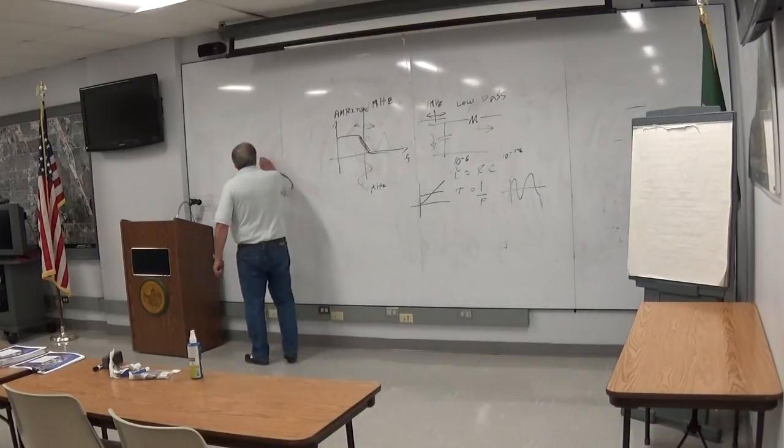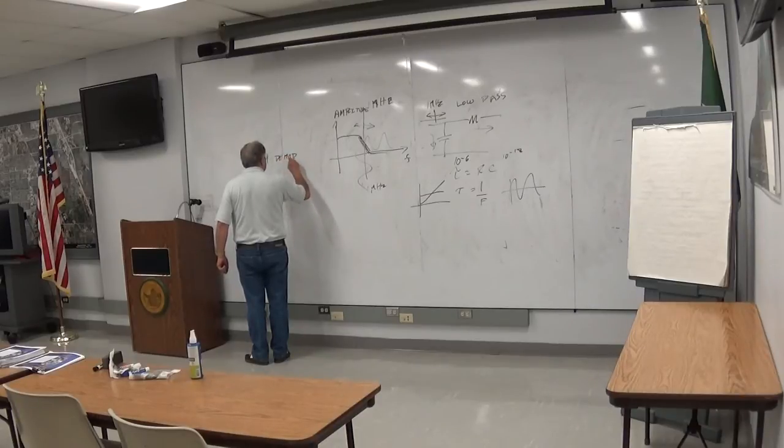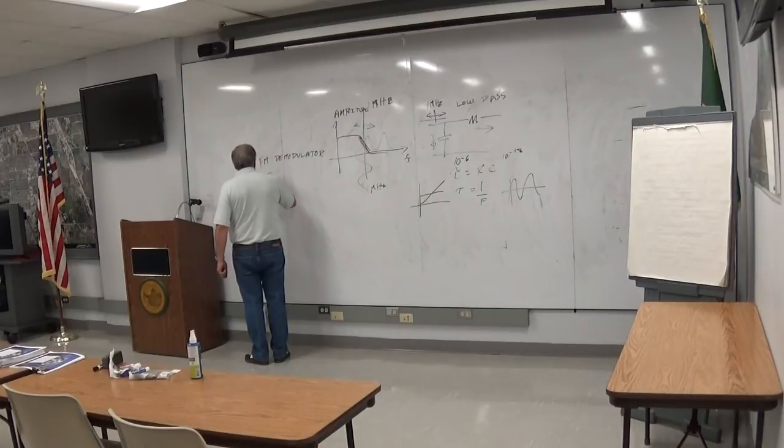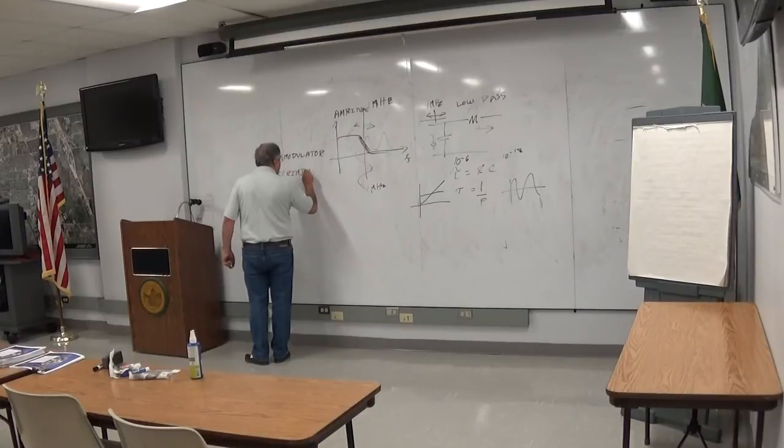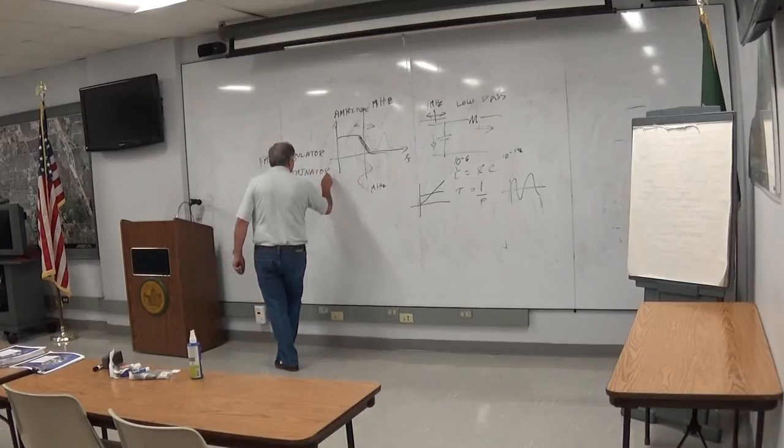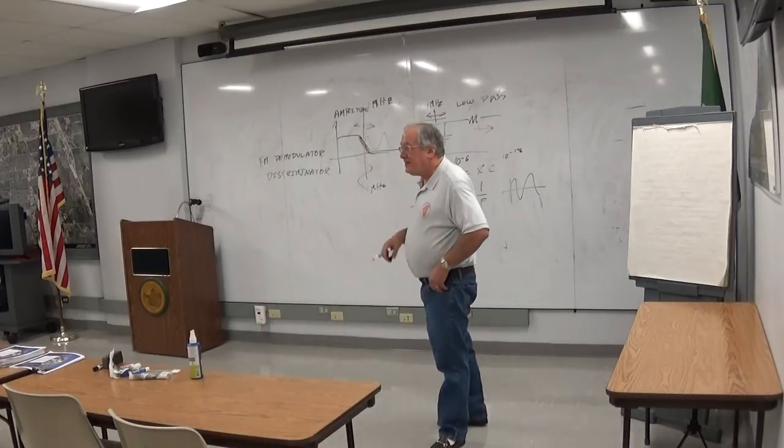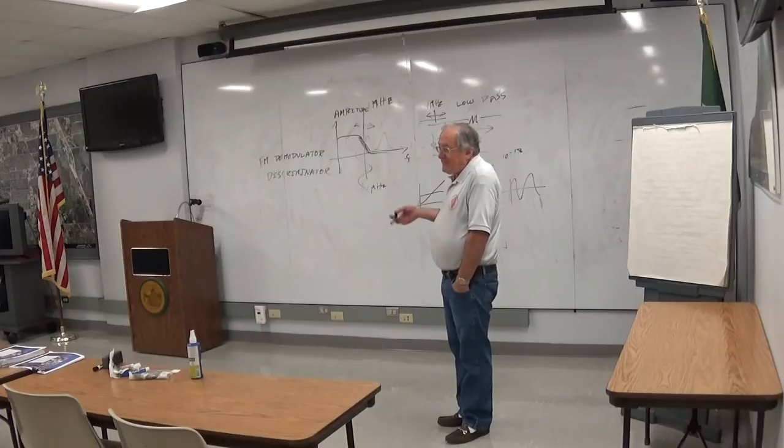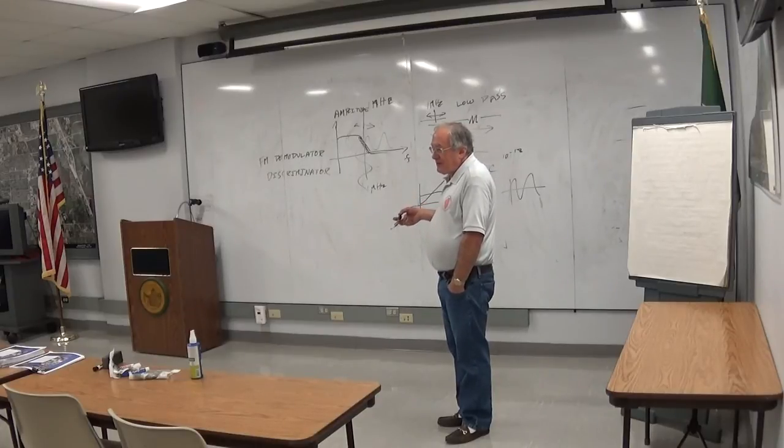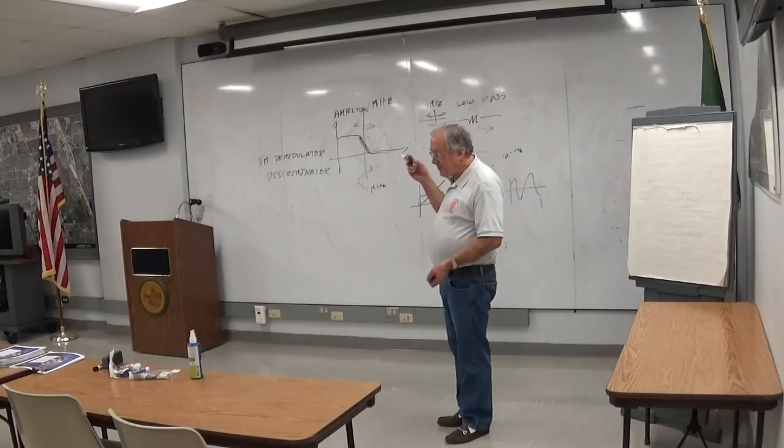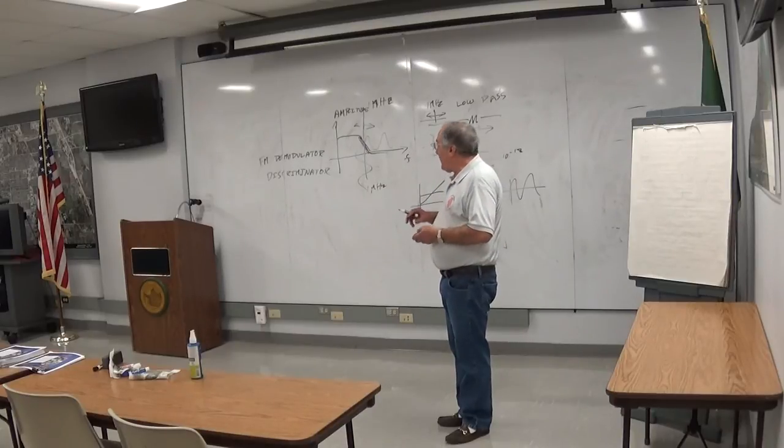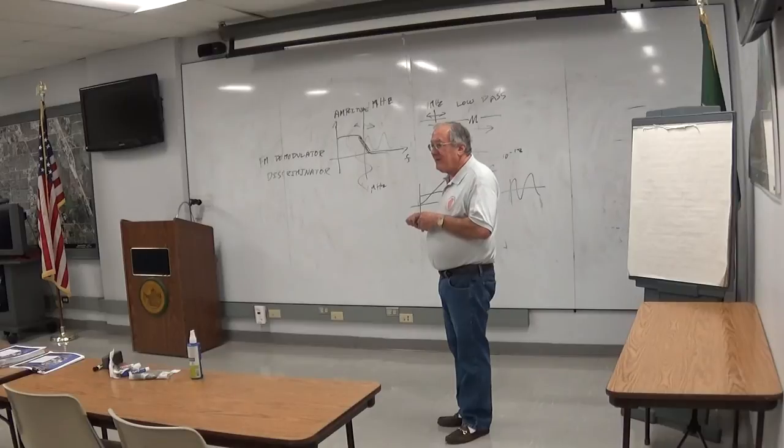So this FM demodulator has a name too. And that word is discriminator. Don't ask me why, but that's the name. Probably Armstrong himself decided to use it and so it is. There's a couple of fancier ways to do this. One is the thing called a ratio detector, which is a circuit that literally does the same thing - turns frequency shifts into amplitude shifts.